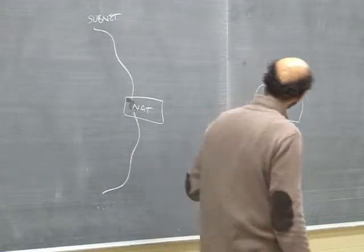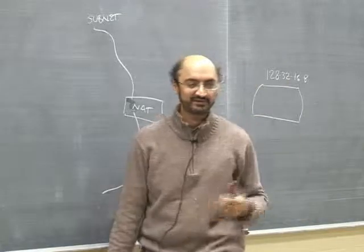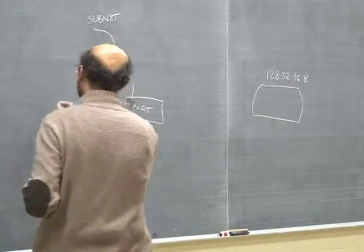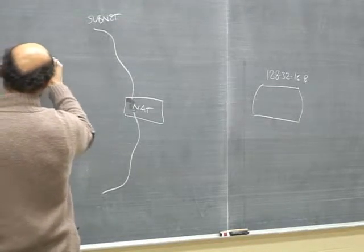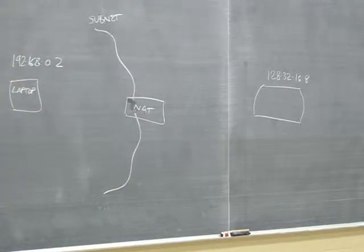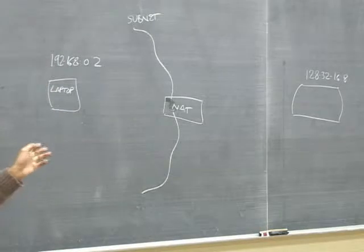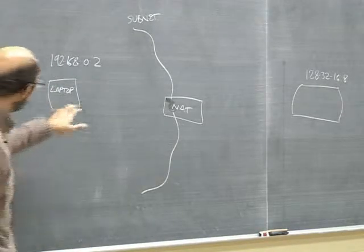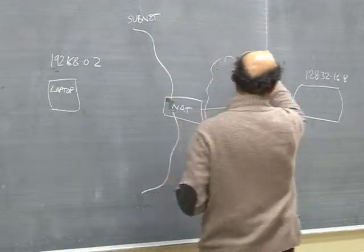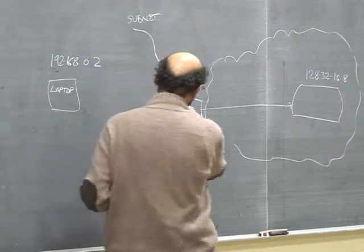Here's the NAT gateway — let's say it has a private address of 192.168.0.2, and that's your laptop at home. You want to arrange for the private address to communicate with this public address bidirectionally. Remember, 192.168.0.2 cannot actually travel across the public Internet — the moment a router in the internet cloud sees a private address, it will drop it. So the NAT gateway is assigned a public address, let's say 129.97.75.1.